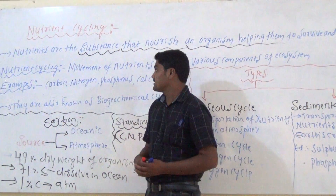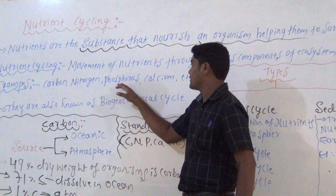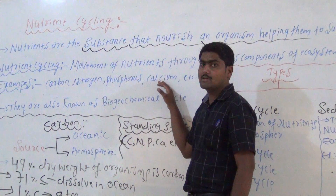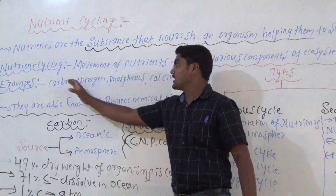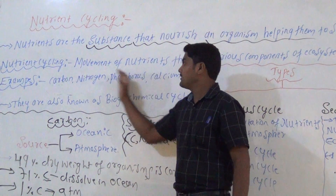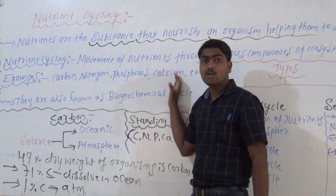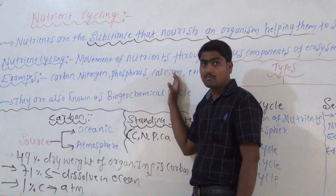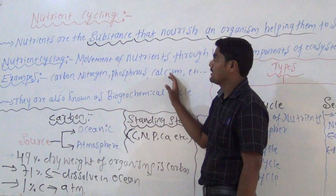Examples of nutrients include carbon, nitrogen, phosphorus, and calcium. These are all examples of nutrients, and their main function is to help with the growth and survival of living systems.